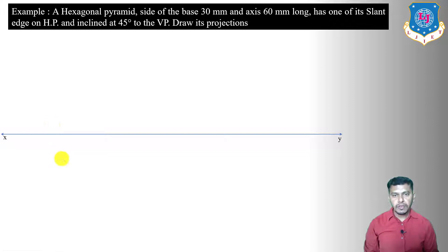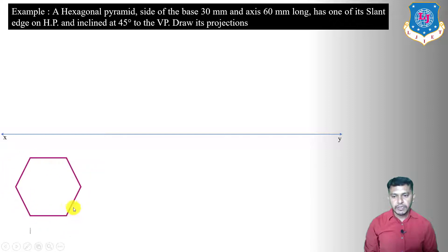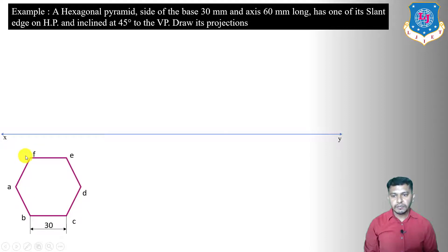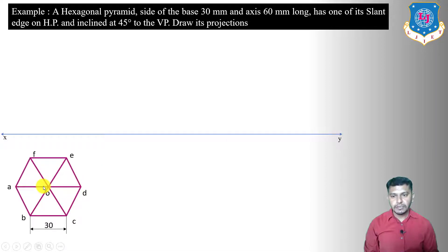We start with the top view, which will be a hexagon because it is a hexagonal pyramid. Draw the hexagon with side length 30 mm — this is the top view of the base with corners A, B, C, D, E, F. To draw the top view of the slant edges, connect the opposite corners: A–D, B–E, C–F. The center point gives the top view of the apex.